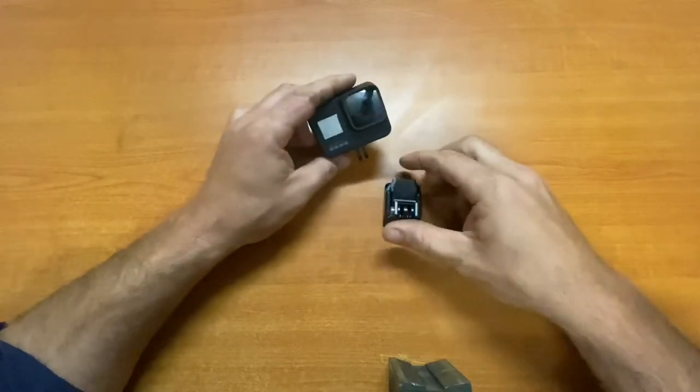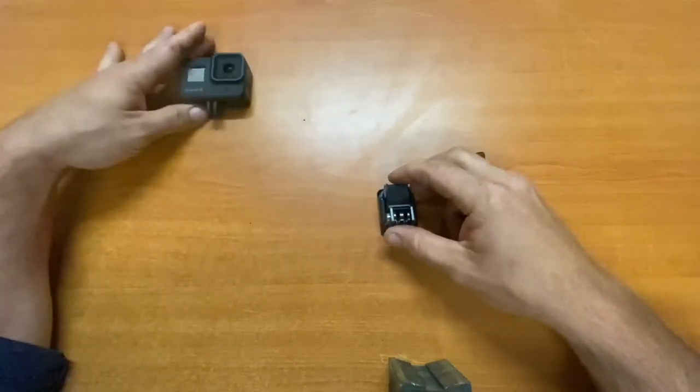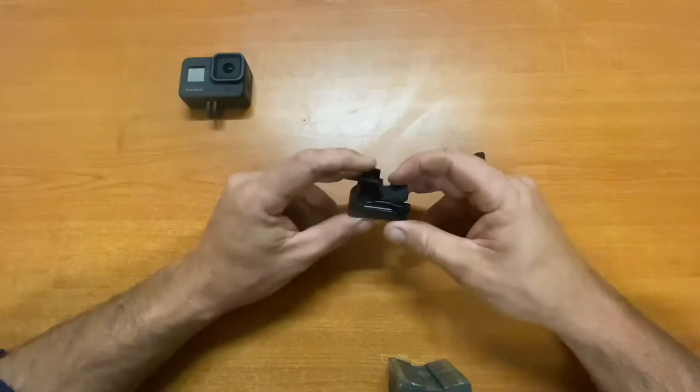Disassemble the mount from the camera by unscrewing the bolt and taking the clip mount off the main mount.